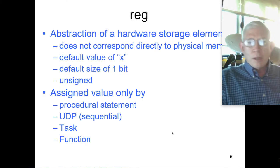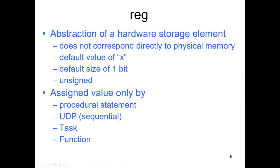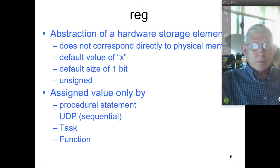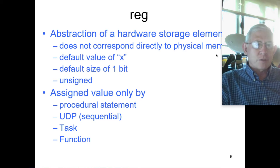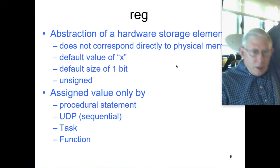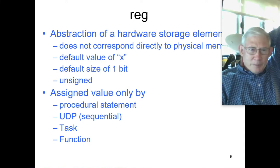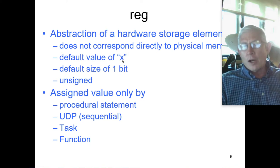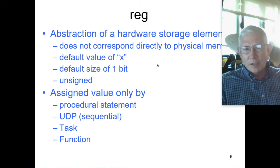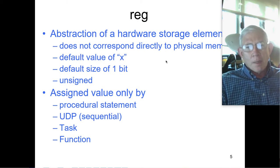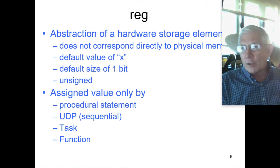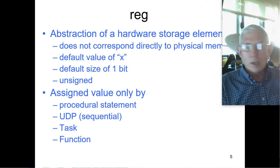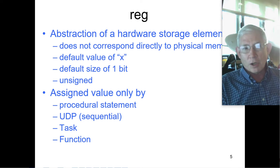Register, per se, is an abstraction of a hardware storage element — think flip-flop. It doesn't correspond directly to physical memory and will generally be made up of flip-flops. It has a default value of unknown, as opposed to disconnected or high Z. Registers are never high Z because they will have a value — it's zero or one — and if we don't know what that value is, it'll be listed as unknown or X, but not disconnected.